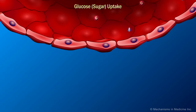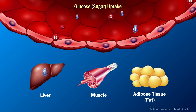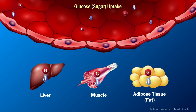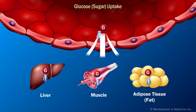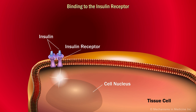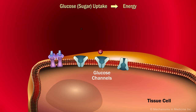Insulin is necessary for glucose to reach and be used by several important target tissues throughout the body. These include the liver, muscle, and adipose tissue. Insulin is necessary to keep blood glucose levels stable in the body. Glucose enters the cell through a process called facilitated diffusion.